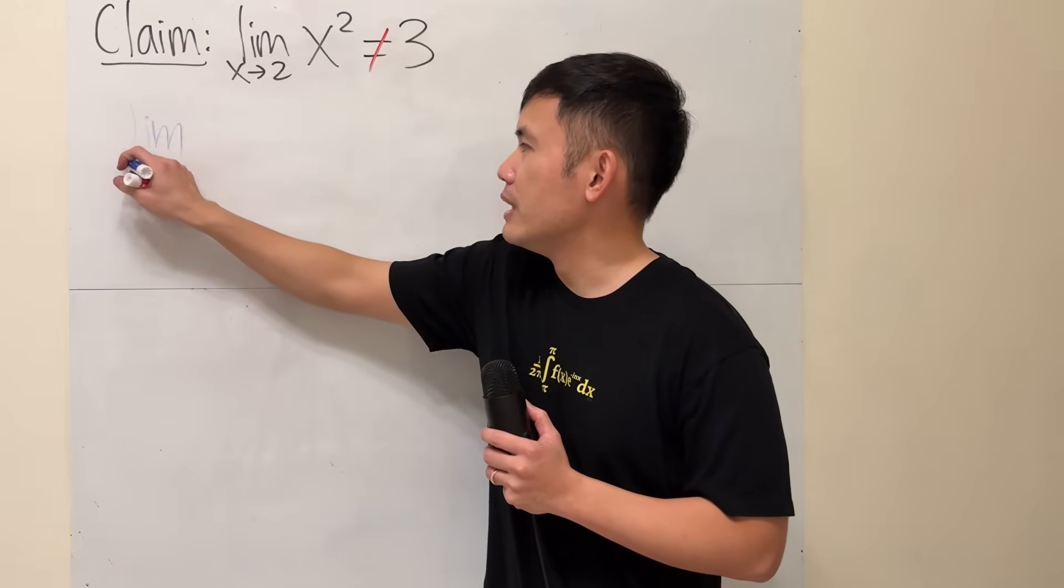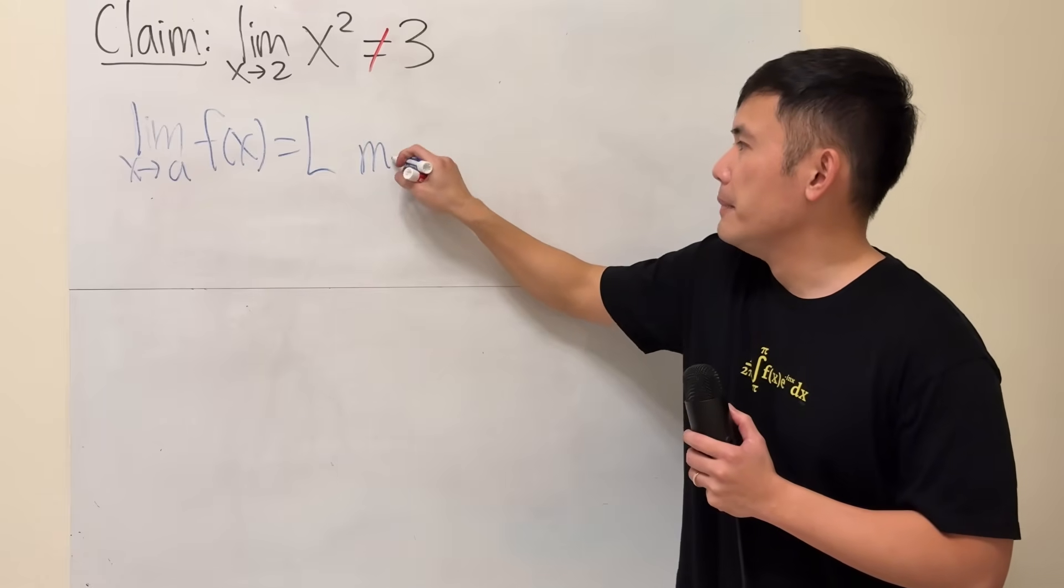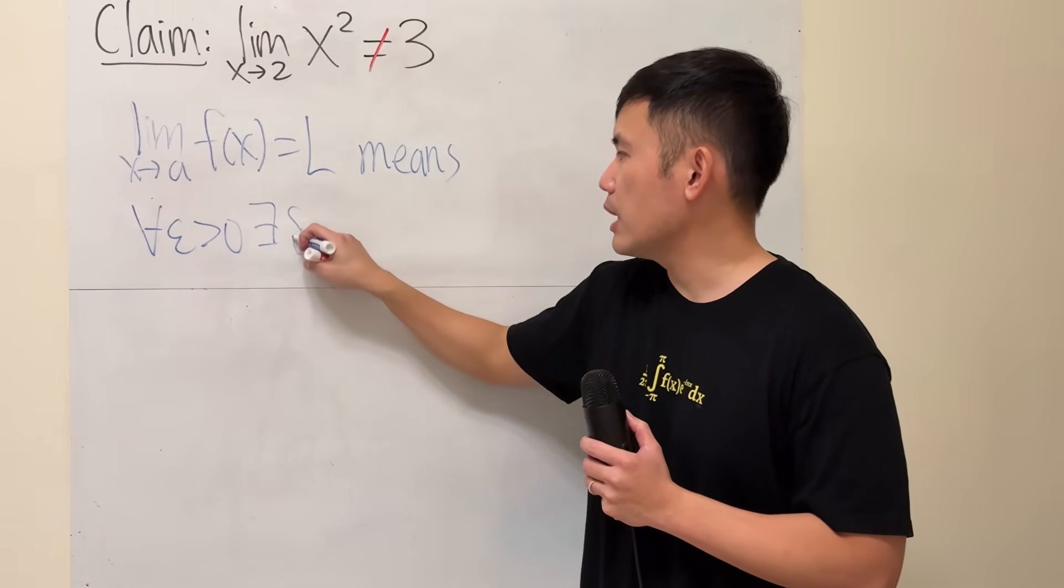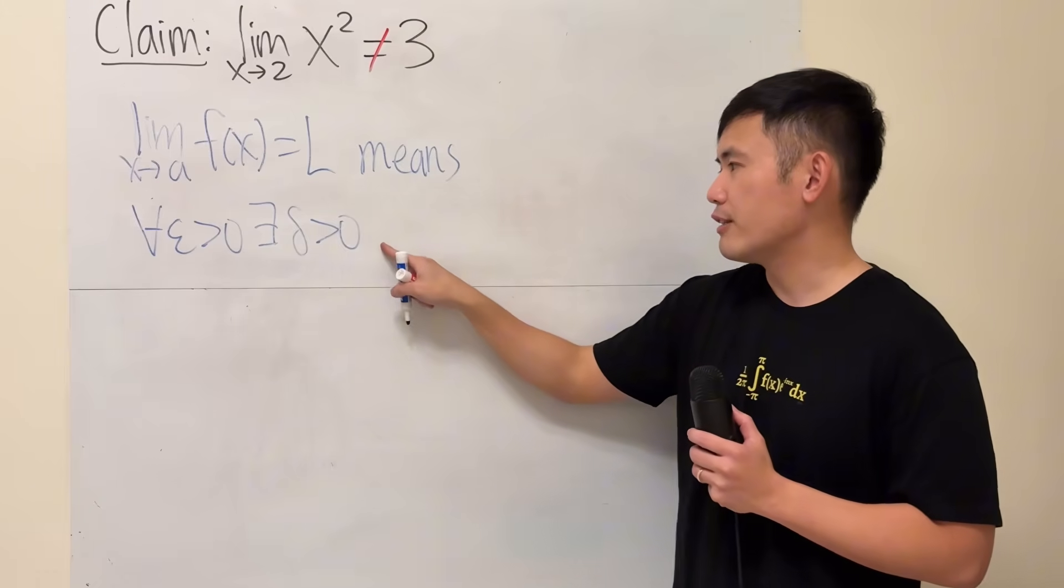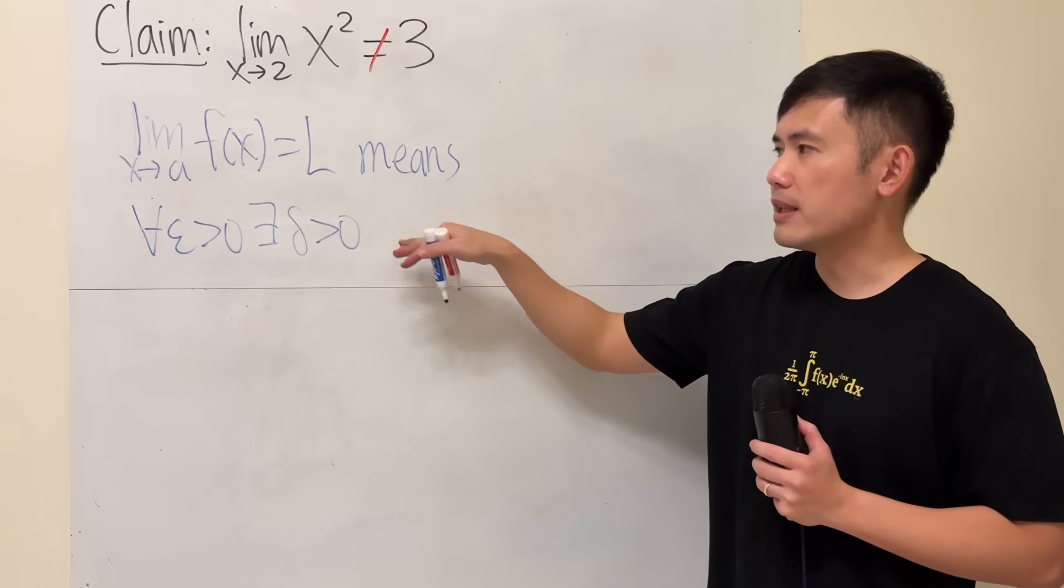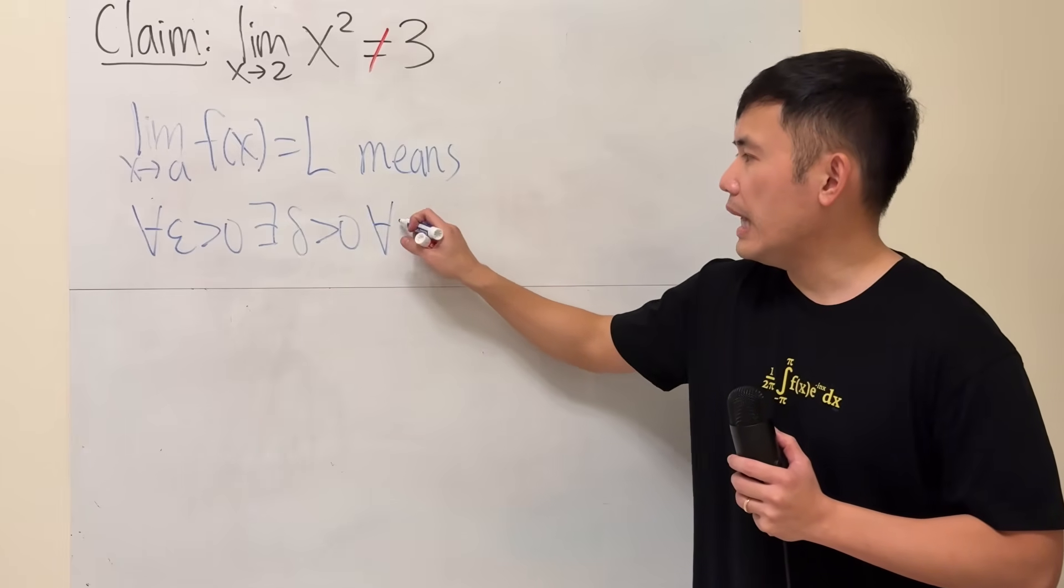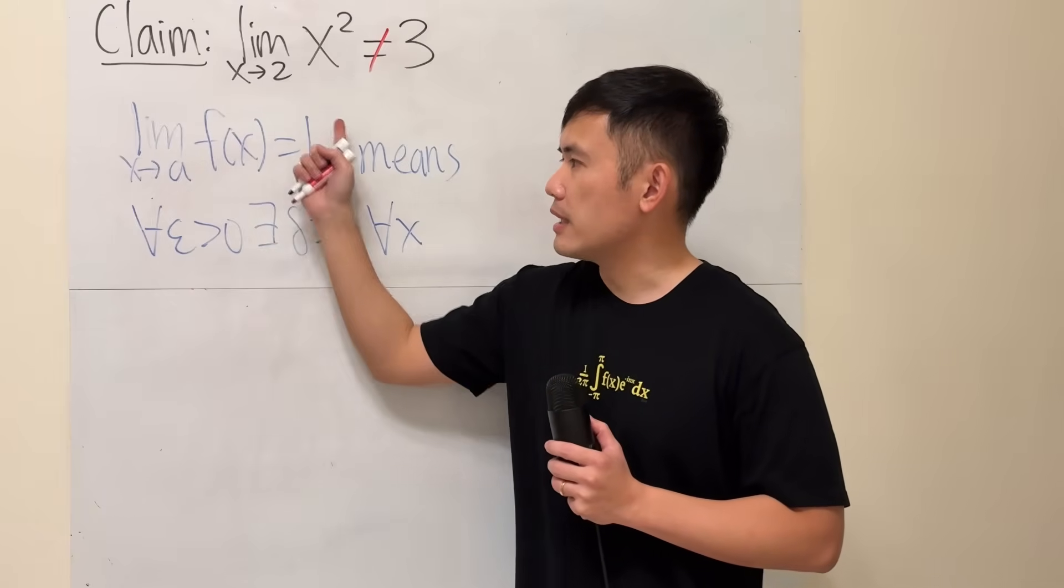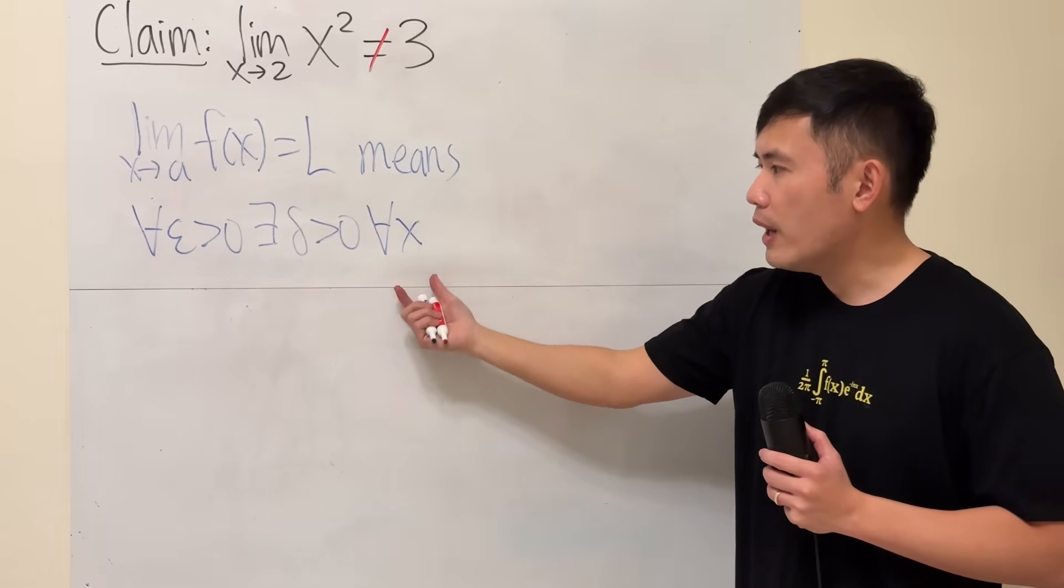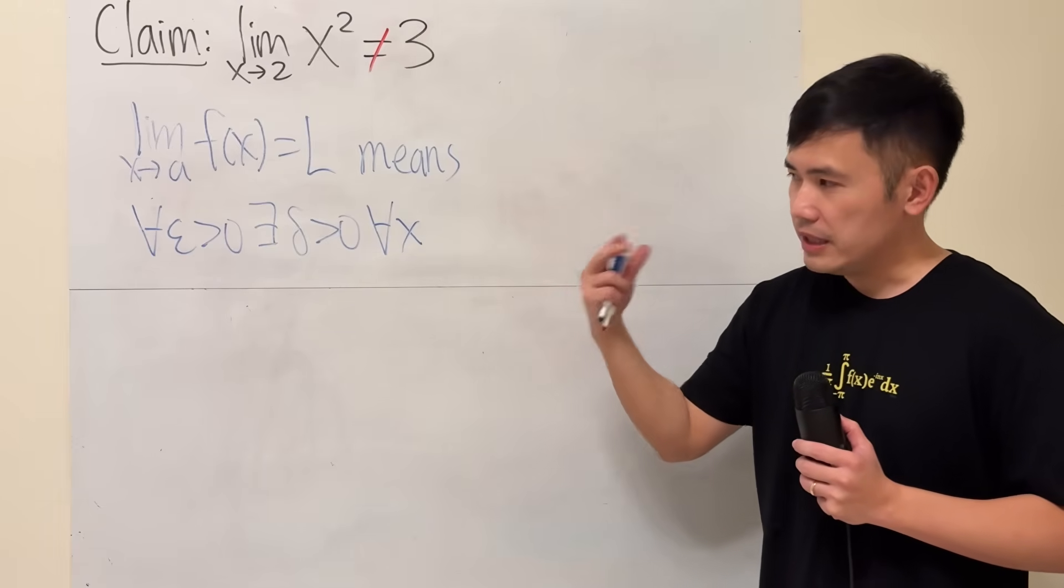Firstly, when we have the usual limit as x approaching some number a of a function, and let's say this is equal to L. This means that, and right here, I'm just going to use all symbols. We have for all epsilon greater than 0, there is a delta greater than 0, such that. However, right here, we really have to put down for all x. Why? Because if you look at this statement, we have the x. The x has to appear in the definition. We need to mention that for all x, that's going to satisfy the following condition. This right here is necessary, especially when we do the negation of the epsilon delta definition.